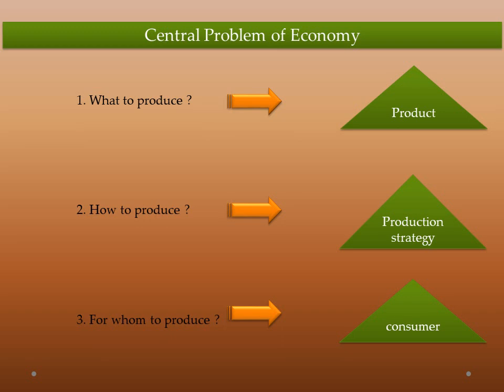The third question, for whom to produce, is related to the consumer. There are three types of consumers: rich class, middle class, and poor class. The rich class will demand costly and quality goods and services. The middle class will demand normal goods. The poor class will demand very cheap goods due to less purchasing power. The economy faces the great problem of deciding for whom to produce — rich class demand, middle class demand, or poor class demand.